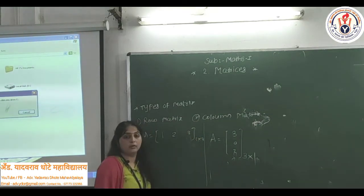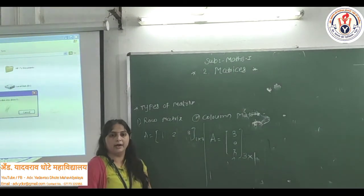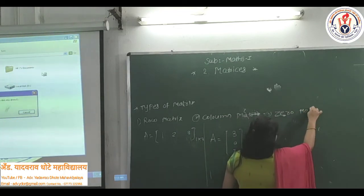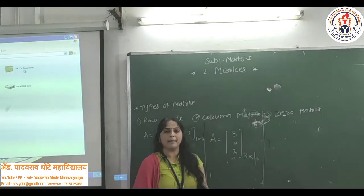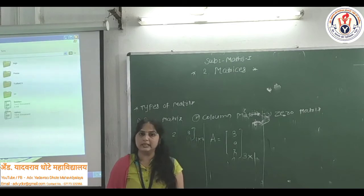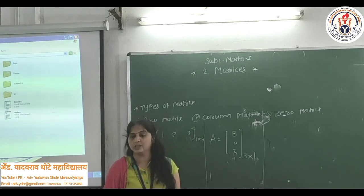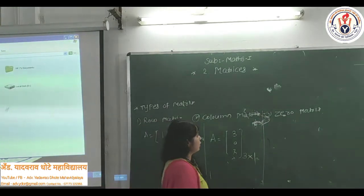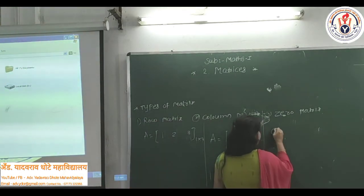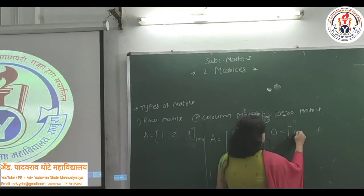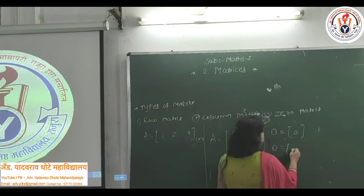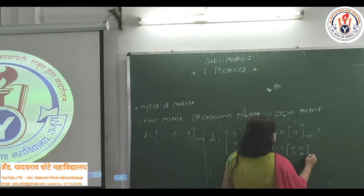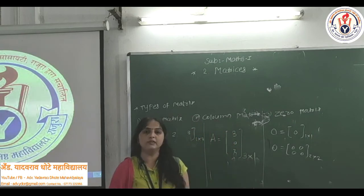Next, the third type is Zero Matrix. A matrix having every element equal to zero is called a zero matrix. Zero matrix is always denoted by capital O. For example, a 2 by 2 matrix with all elements as zero is an example of a zero matrix.